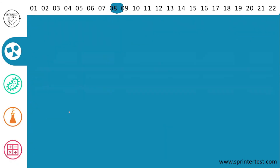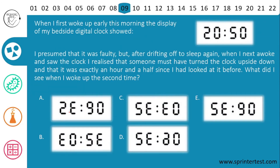Moving to the 9th question. When I first woke up early this morning, the display of my bedside digital clock showed 20:50. I presumed it was faulty. But after drifting off to sleep again, when I next awoke and saw the clock, I realized that someone must have turned the clock upside down and that it was exactly an hour and a half since I had looked at it before. So what did I see when I woke up the second time?